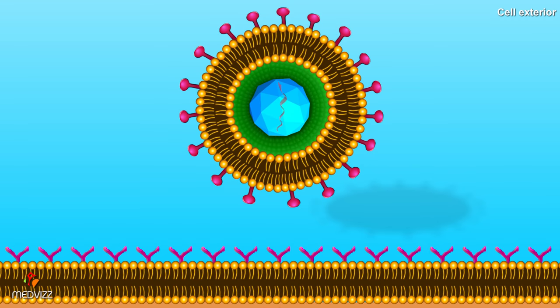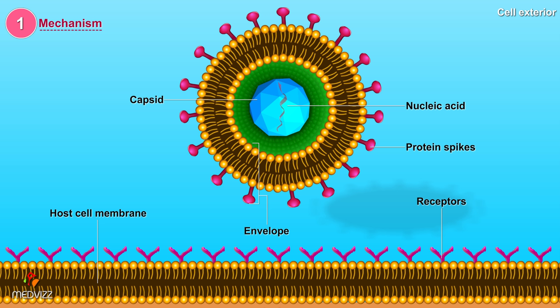There are two mechanisms by which enveloped viruses enter host cells. In one of the mechanisms, the virion attaches to host cell receptors by specific proteins on its surface called spikes.